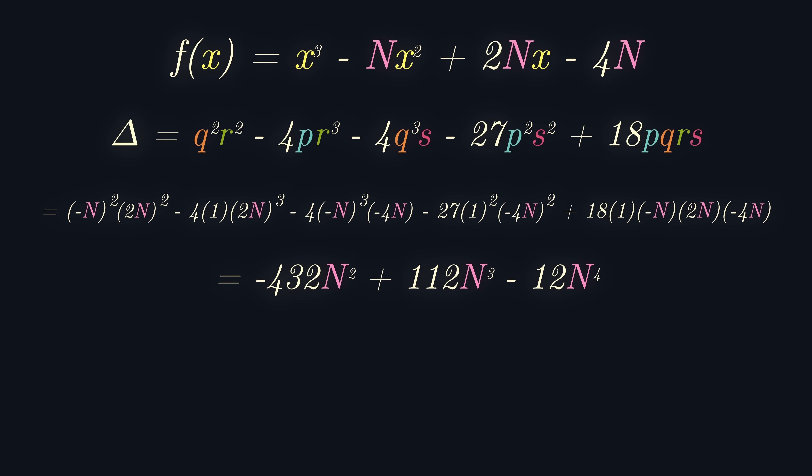Now notice that we can take out a factor of minus 4n squared, and the remaining expression is a quadratic. Completing the square on this quadratic shows that the cubic discriminant is of the form minus a squared multiplied by (b squared plus c). And since squaring any real number is always positive, we always get a negative cubic discriminant, and hence we've shown that f of x has one real and two complex roots as required.